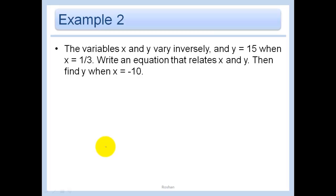The variables X and Y vary inversely. So they vary inversely. We know we have Y equals A over X. And Y equals 15 when X is equal to 1 third. So we have A divided by 1 third. Well, A divided by 1 third is just the same thing as A times 3 over 1. When we divide, we can multiply by the reciprocal, right?